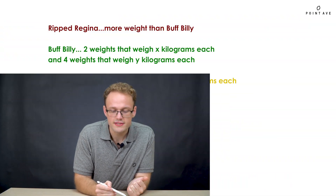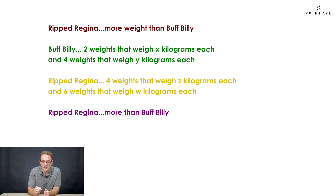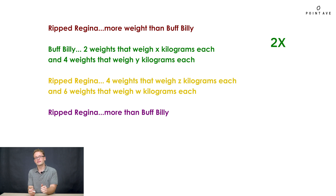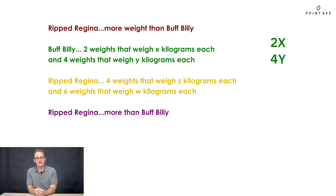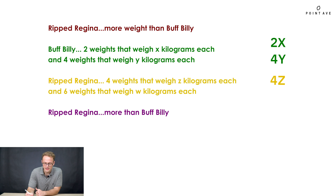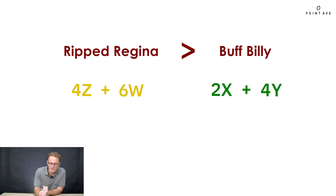Luckily, the phrases we identified give us those weights. The second phrase gives us Billy's weight: he can lift two weights that weigh x kilograms each — that's 2x — and four weights that weigh y kilograms each — that's 4y. So Billy's weight is 2x + 4y. Similarly, Regina can lift four weights that weigh z kilograms — that's 4z — and six weights that weigh w kilograms — that's 6w. Putting that together, we get 4z + 6w.